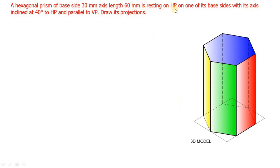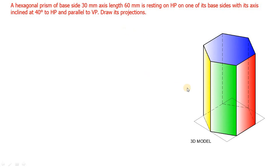It is resting on HP on one of its base sides - totally 6 base sides are there, and it is going to rest on HP on any one of these sides. Next, with its axis inclined 40 degrees to HP. The axis is inclined 40 degrees to HP, and if it is inclined to HP, it will be parallel to VP. So what will be the projections? This is the question.